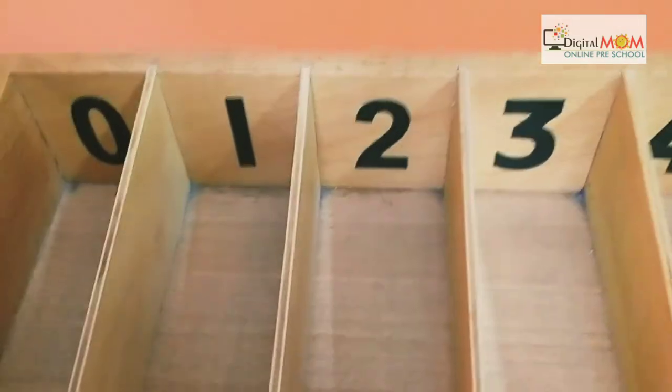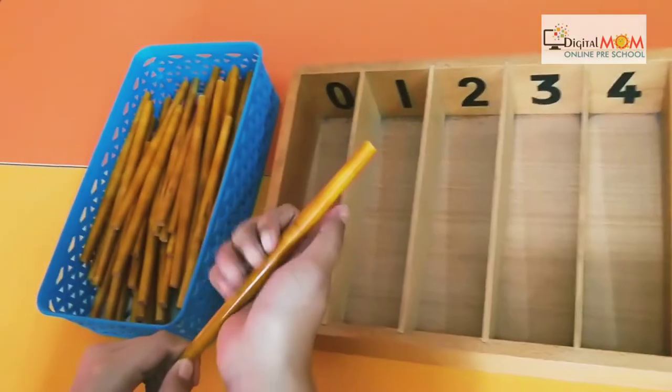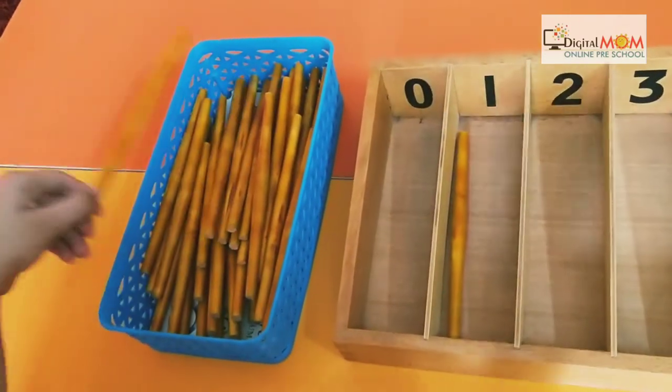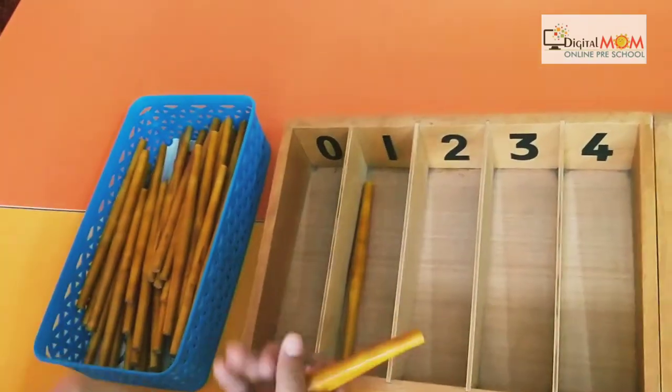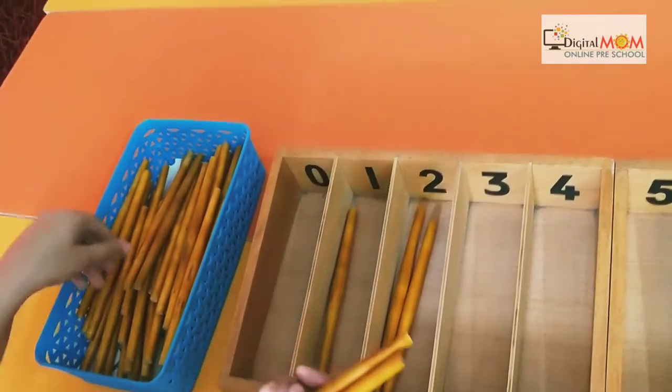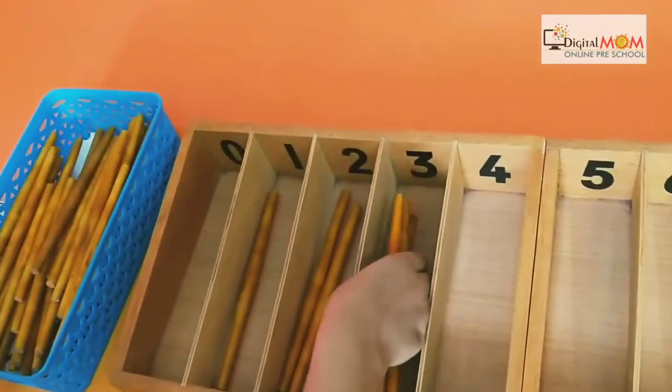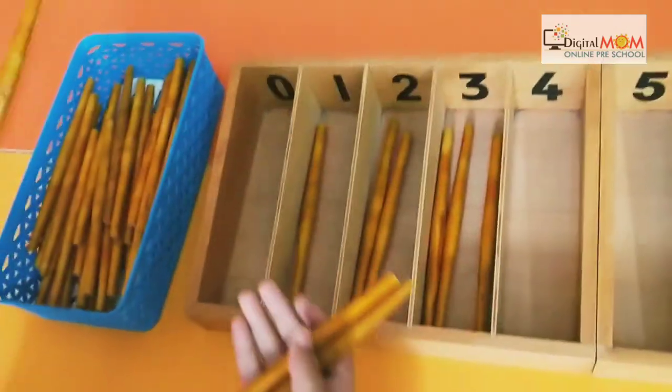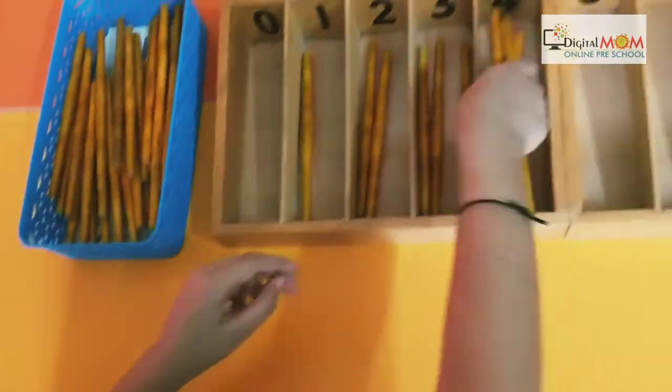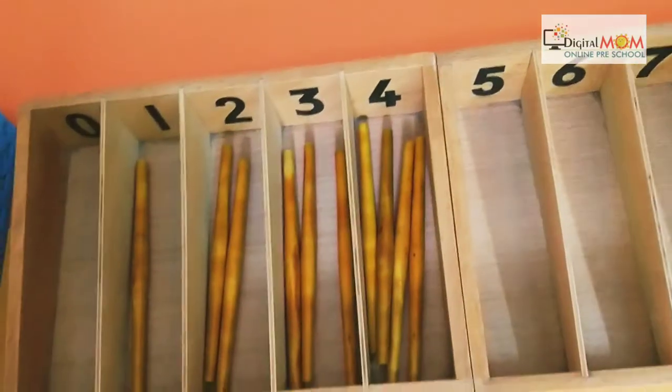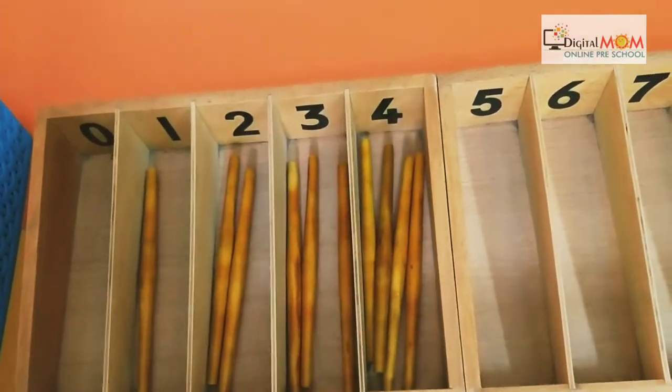We will start from one. You can see the child is holding the spindle in her wrist. One, and one more - two, then one more - three. One, one more - two, one more - three, and one more - four. Very nice. Can you feel as you move forward the bundles are becoming larger in number?